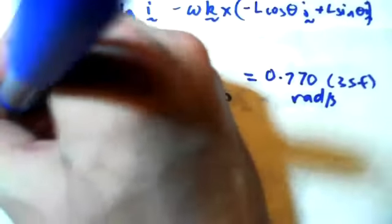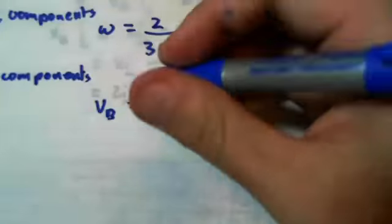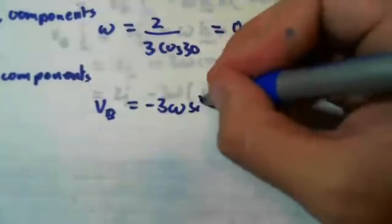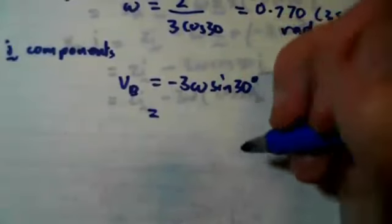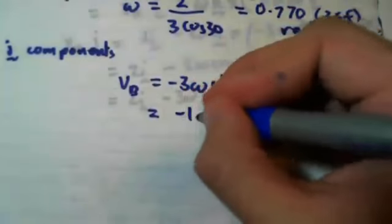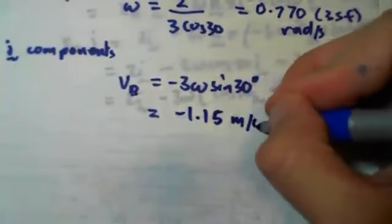And the next thing we'll do is we'll find our J components. So we know our V of B is in the J direction, and that equals negative 3 omega sine 30. And we've already found our omega, so if we substitute that back in and plug that into our calculator, we end up getting negative 1.1547 etc., but we're going to do it to three significant figures, so it's negative 1.15 meters a second down.